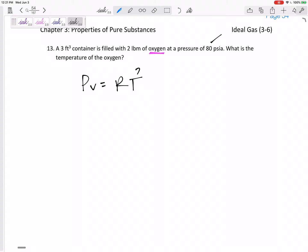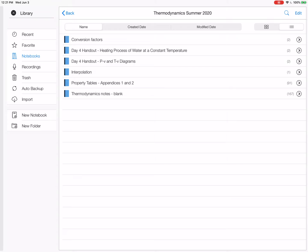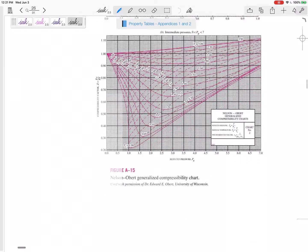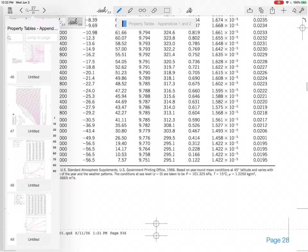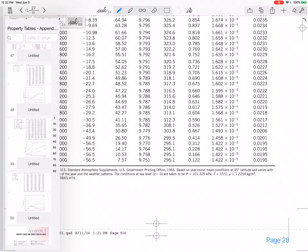So first, what is the R? What is the R for oxygen? Well, let's look at table A1. And did you notice that this was, these were English units, right? Feet cubed, pound mass, PSIA.